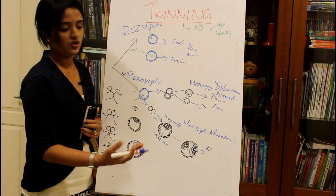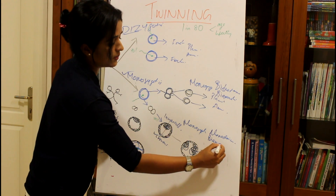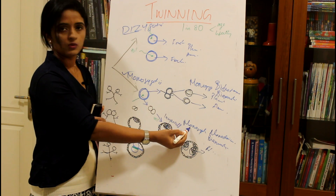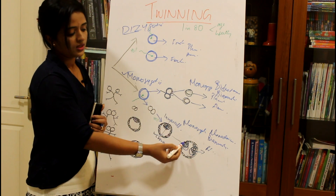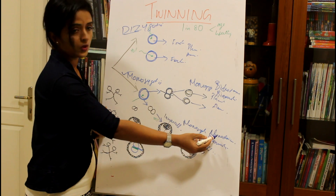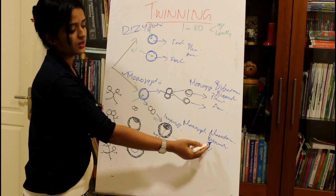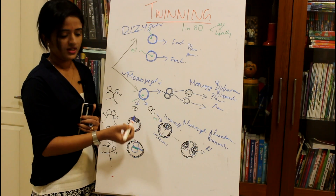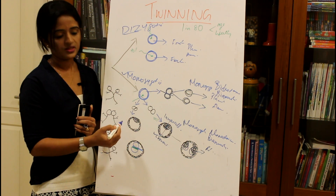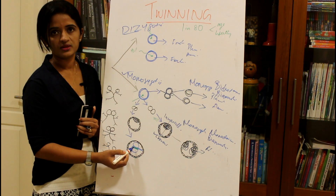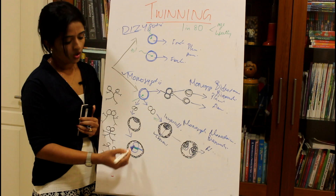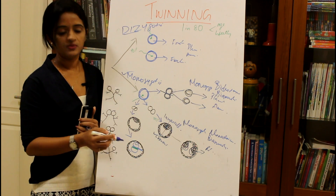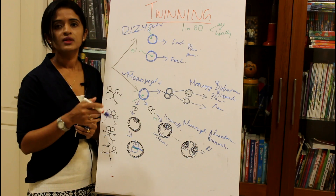In another condition, division occurs after the bilaminar germ disc is formed. At this stage, both the chorionic cavity and the amniotic cavity are already established. Division now happens within a shared chorionic and amniotic cavity, before the formation of the primitive streak.